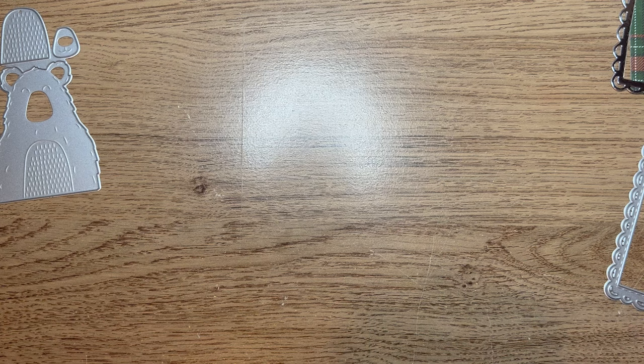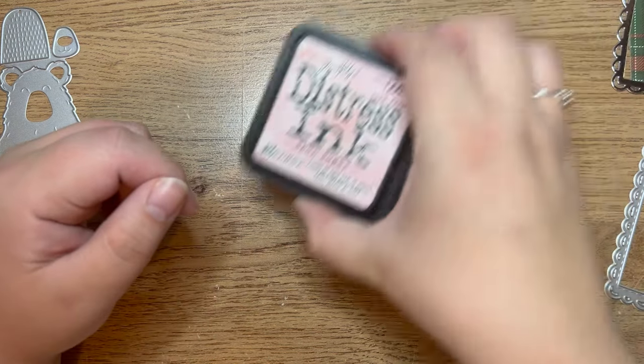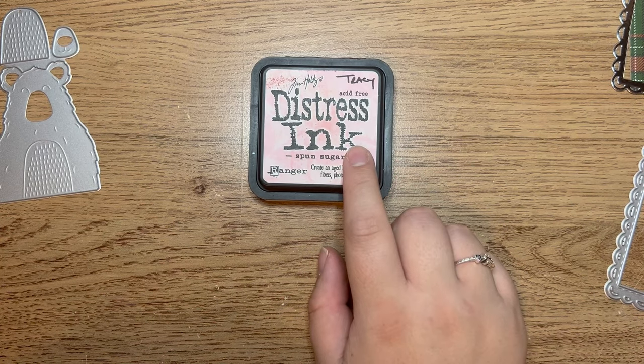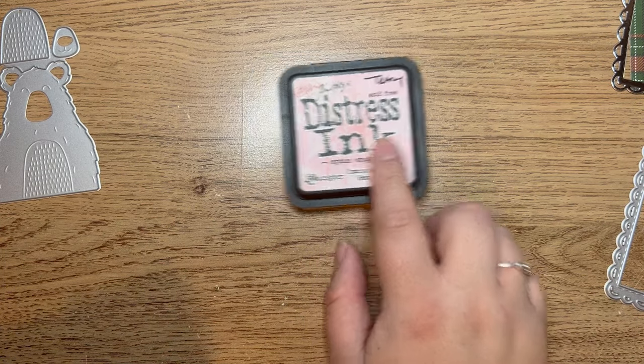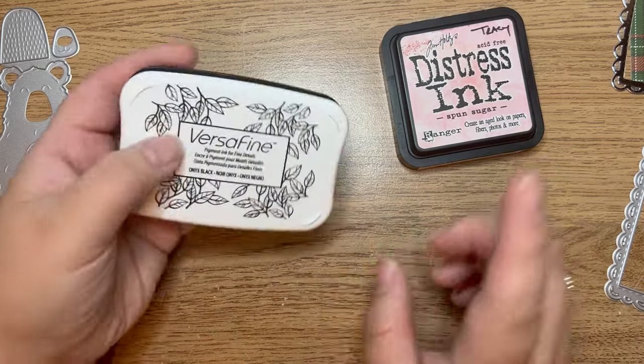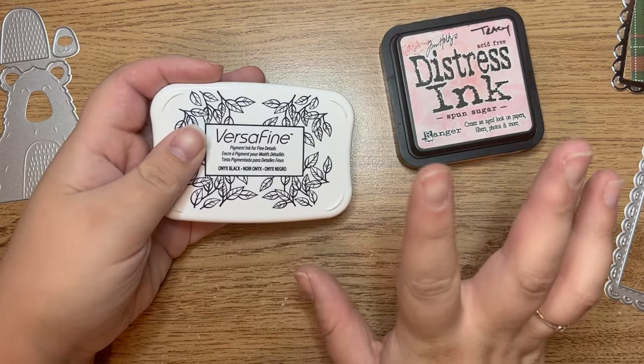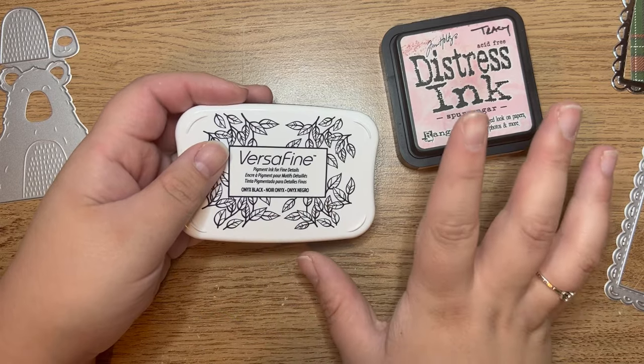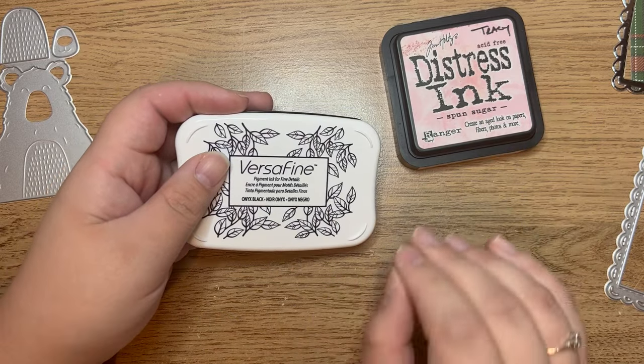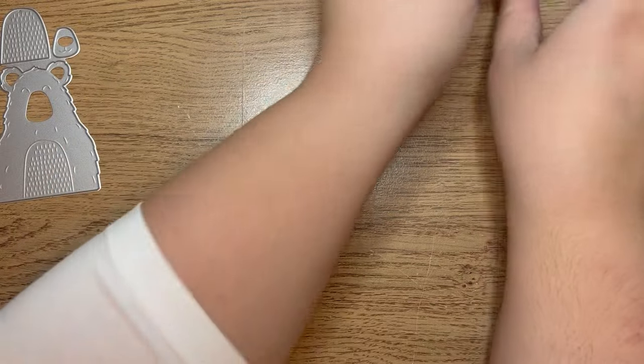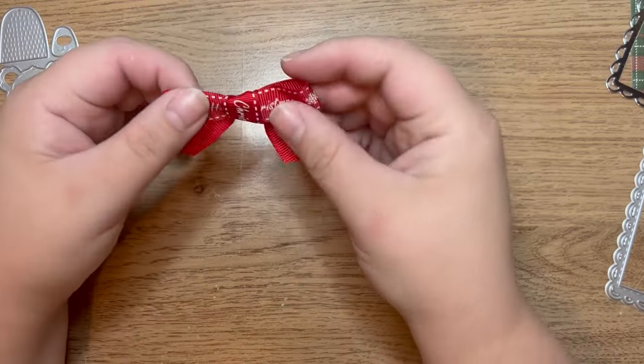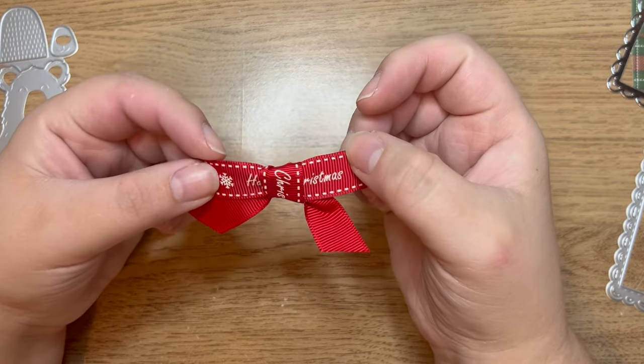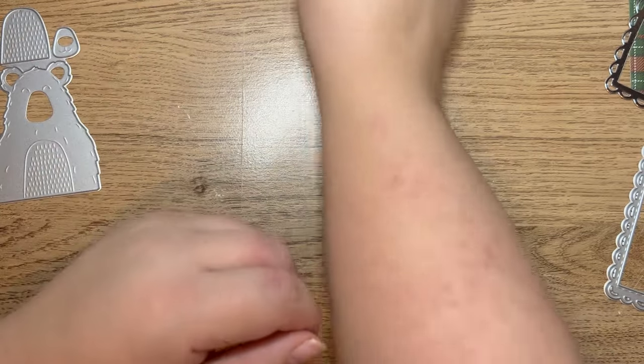I have the two sentiment dies, Festive and Hugs. We're also using different ink pads - distress ink in Spun Sugar for the bear's ears, and VersaFine black ink for the polar bear's nose. I also have a little ribbon bow I made from Christmas ribbon.